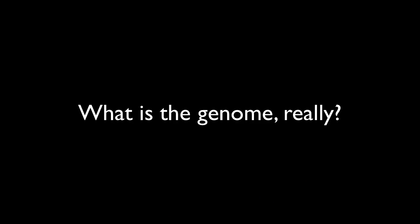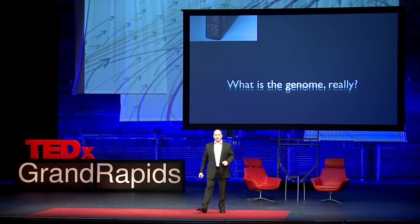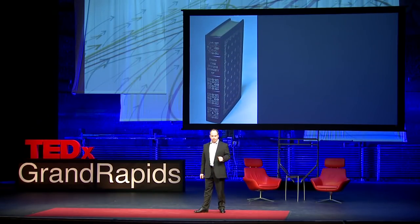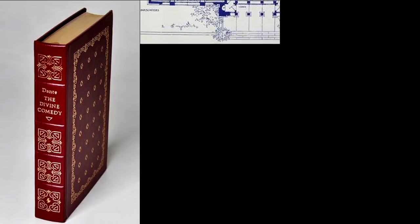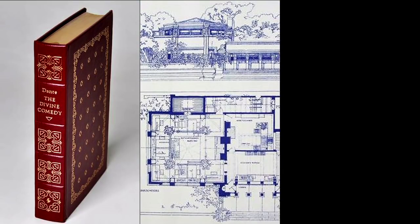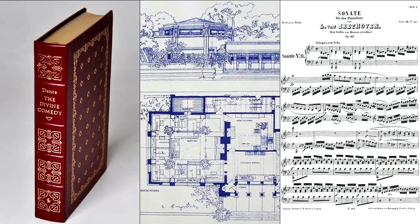So, what is the genome, really? It's the plan. It's often been analogized as a book — the chapters, paragraphs, sentences, words, and letters of the book forming the story, and you are that story. It's been analogized as a blueprint, and you are the building. And quite beautifully, it's been analogized as a musical score, and you are the music.